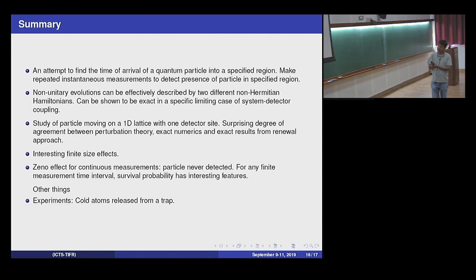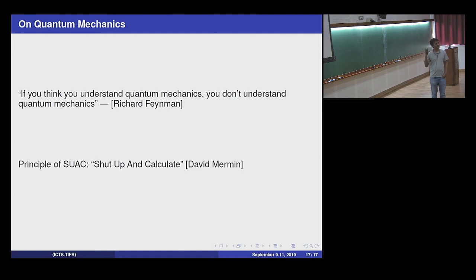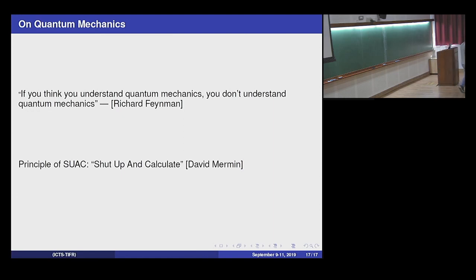To summarize: we try to understand when does a detector detect a particle that is evolving in some way. You find the surprising result that if you measure it continuously, you don't detect it — that's the Zeno paradox. But with quasi-Zeno dynamics, you get quite interesting results, mathematically described by a non-Hermitian Hamiltonian with a lot of interesting properties. I'll leave with a quote from David Mermin — the principle of SUSWAC: shut up and calculate. Thank you.